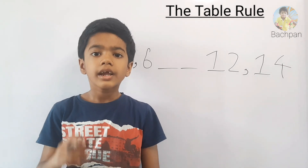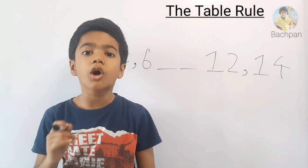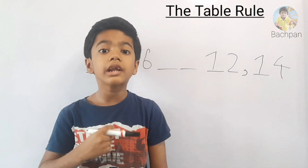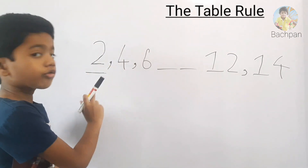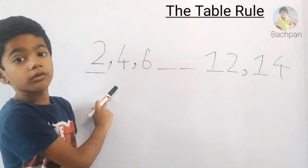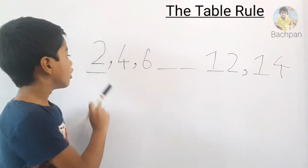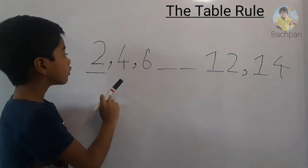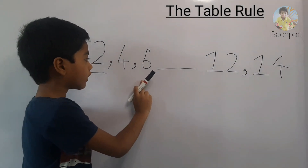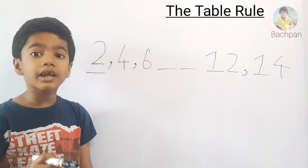Let's check if the table rule is applicable or not. What is the first number in our series? 2. So let's recite the 2 times table: 2 ones are 2, 2 twos are 4, 2 threes are 6. Yes! The table rule is applicable.